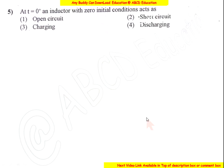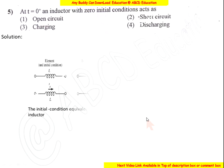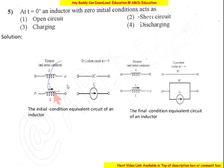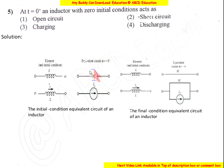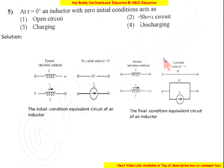At t equals zero plus, an inductor with zero initial condition acts as an open circuit. At t equals zero, because there is no current in the inductor, it behaves like an open circuit. At t equals infinity, it behaves like a short circuit. So the answer is option 1: open circuit.